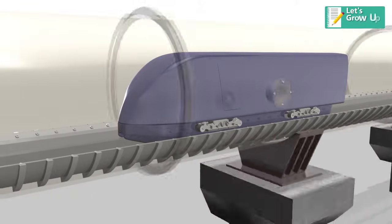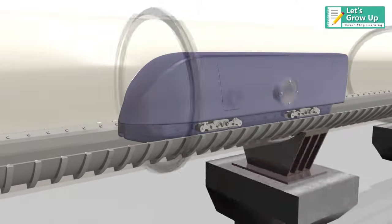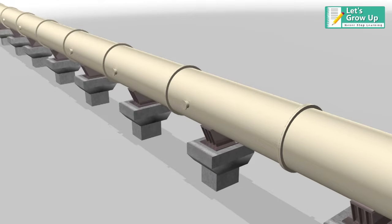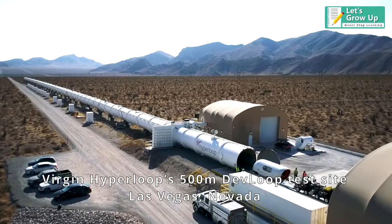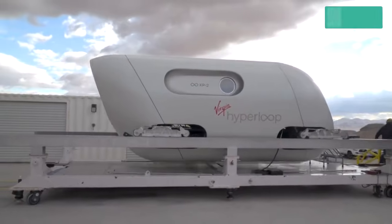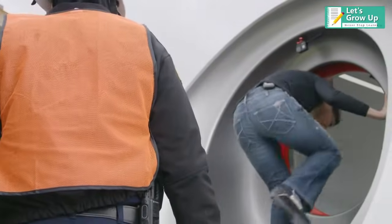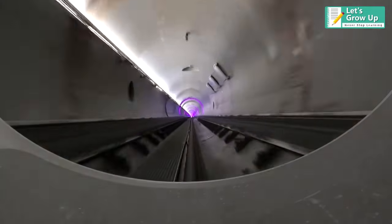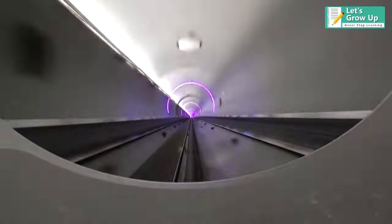The main attraction of the Hyperloop system is its supersonic speed. Virgin Hyperloop has trialed its first-ever journey with passengers in the desert of Nevada. The futuristic transport concept involves pods inside vacuum tubes carrying passengers at high speeds.